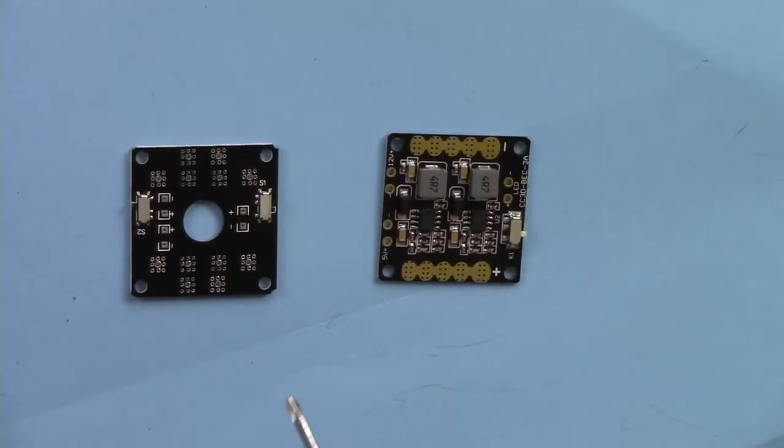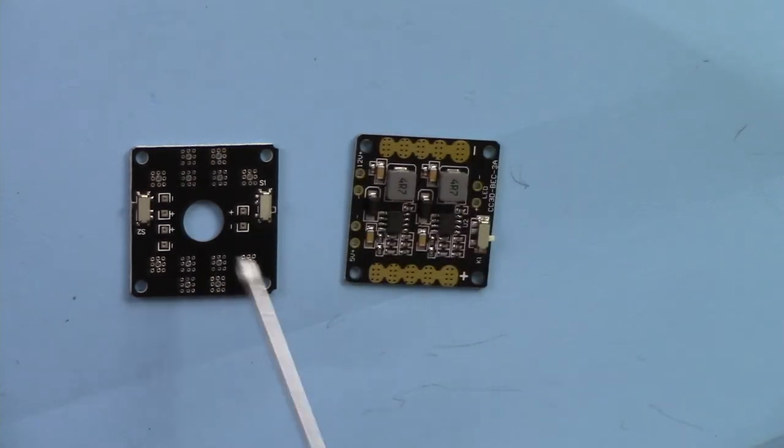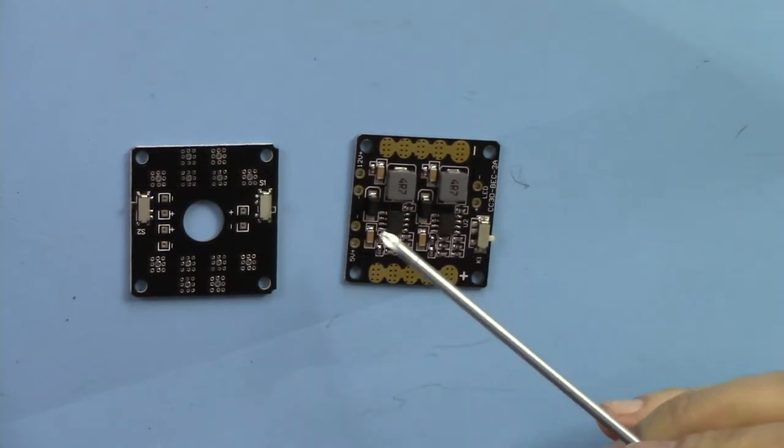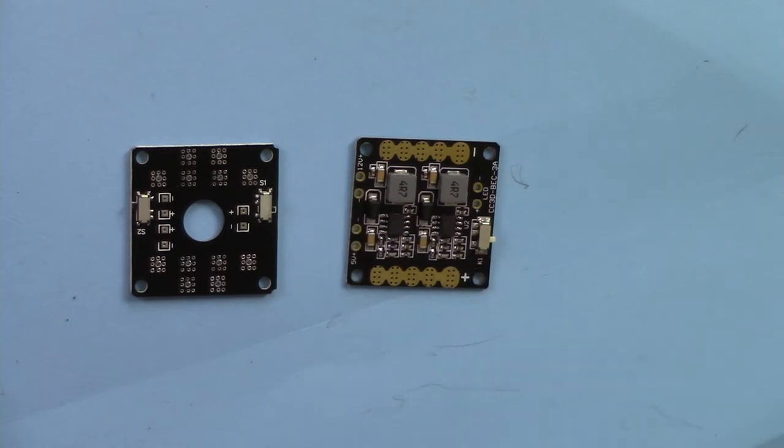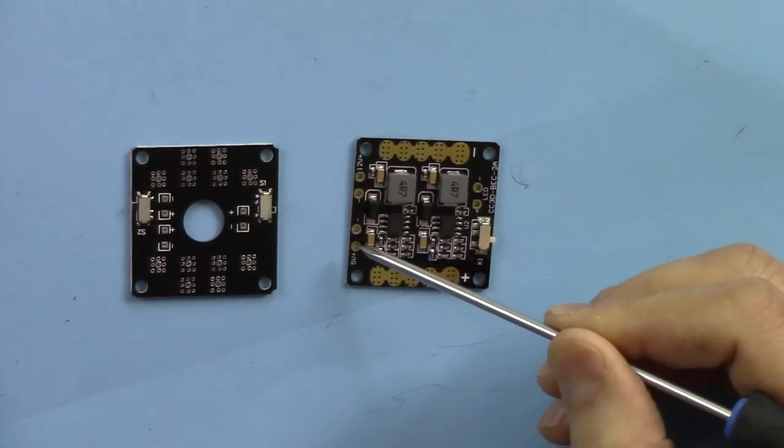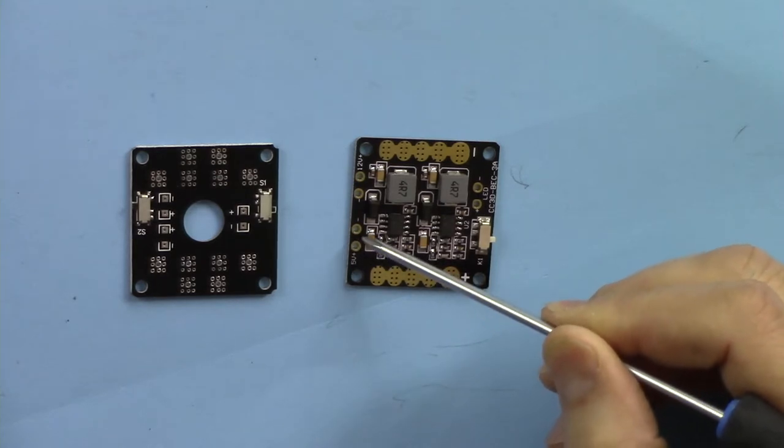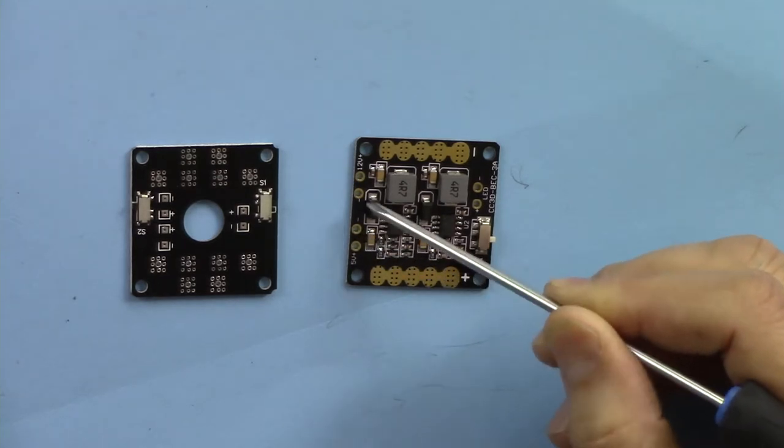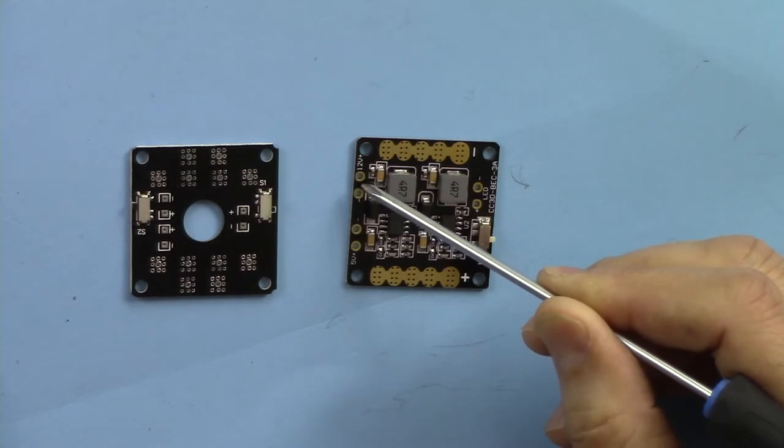We have two types of power distribution board. The difference between these two is that this one doesn't have any active component. It doesn't alter the voltage or do anything to the input and output except distribute it. But this one also has regulated 5 volt and 12 volt outputs. The 5 volts is for camera, flight controller, or some other electronics that need 5 volts.